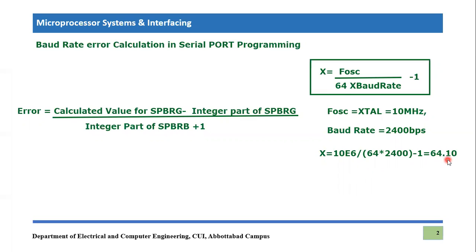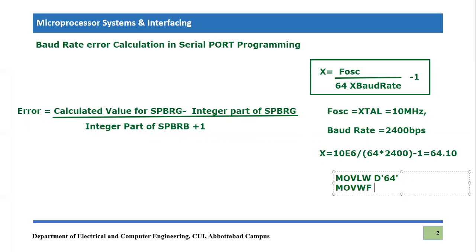But if you remember, when we were using this value we were using the integer part only, not the exact value. So that means it will lead to a certain error in the actual baud rate. We want to achieve 2400 bits per second, but we need to put the value X = 64.1. However, in the program — if you remember — we used the line 'movlw 64', meaning we used exactly 64, and then put that value into the SPBRG register. That means we haven't used the exact value of SPBRG.